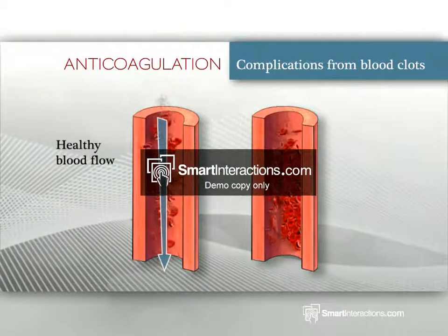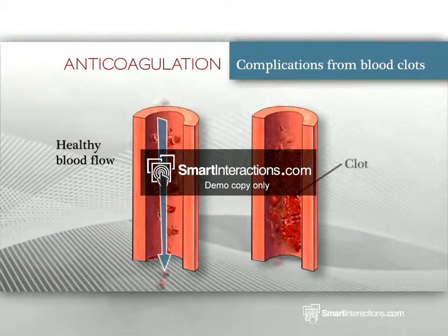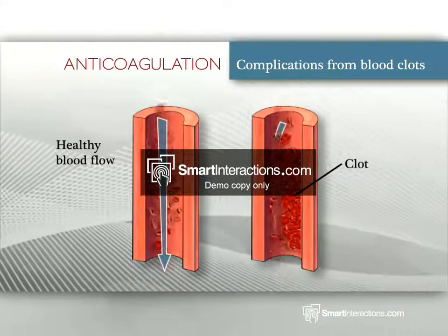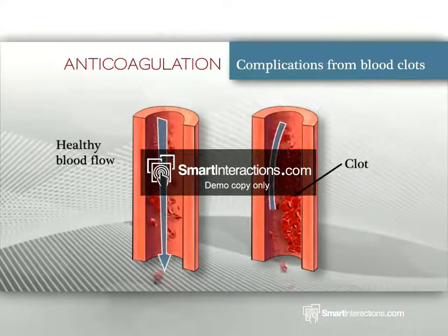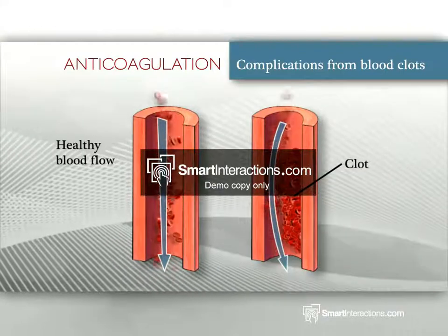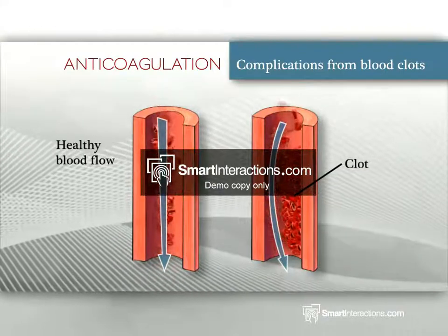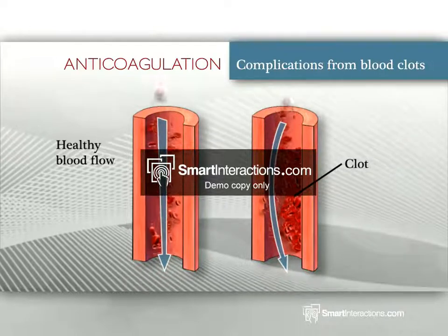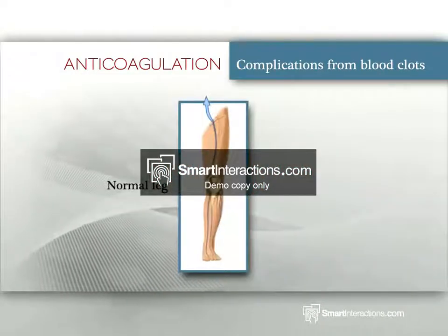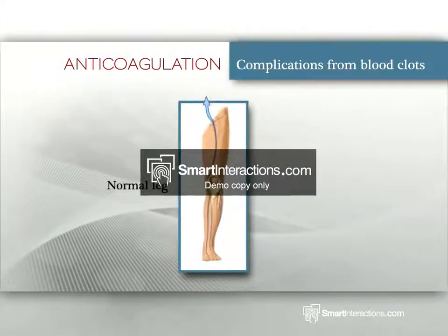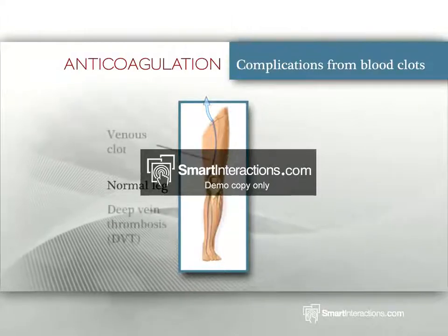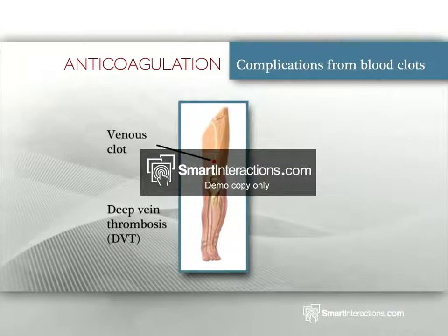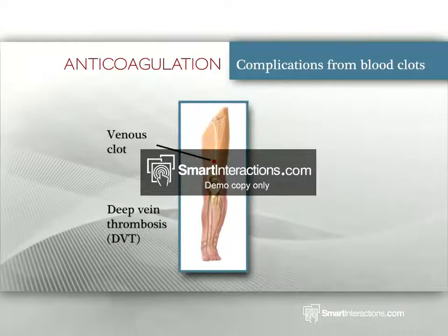Complications from blood clots. When a blood clot forms inside a vein, it is called a thrombus. This is very serious as it can block the blood vessel. A blocked blood vessel restricts the flow of blood and oxygen to the tissues served by that vessel. Over time, as the blood clot becomes bigger and restricts blood flow, the affected area will become very painful.